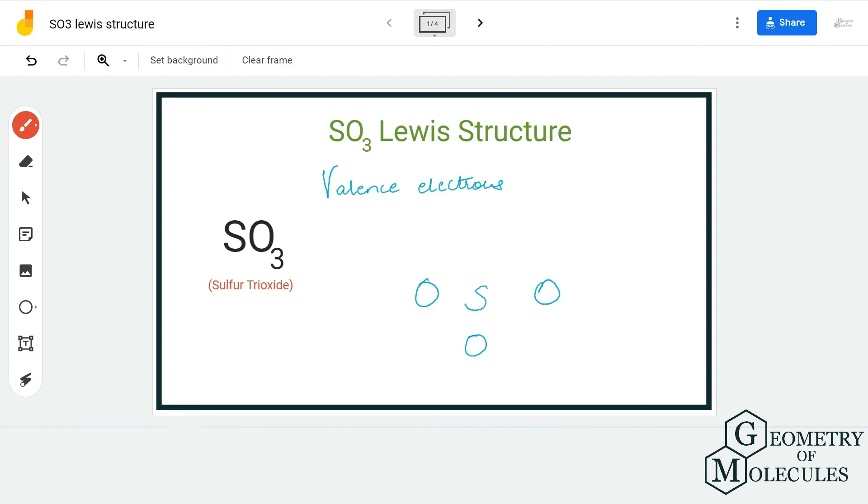Hi guys, welcome back to our channel. In today's video we are going to help you find out the Lewis structure of SO3 molecule. It's a chemical formula for sulfur trioxide, and to determine its Lewis structure we first need to know the total number of valence electrons.